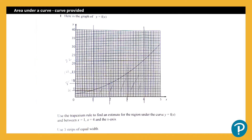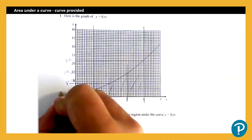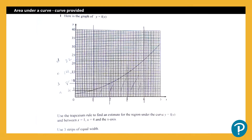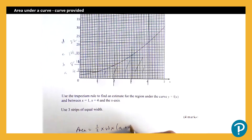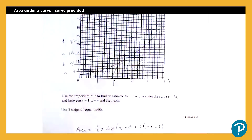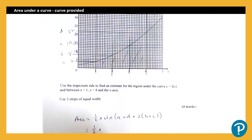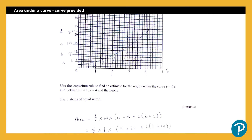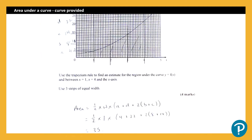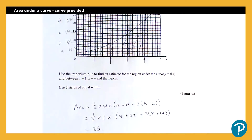So those are all my values. Now we plug these into the formula. Calling them a, b, c, and d, the area is a half times the width times (a plus d plus two lots of b plus c). Substituting in: that's a half times the width of one, times (4 plus 22 plus two lots of 8 plus 14). Putting that into the calculator gives us 35. Nice and straightforward.